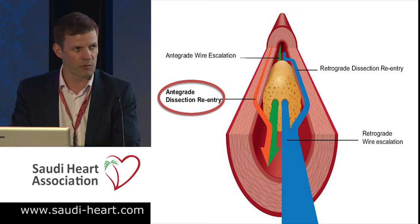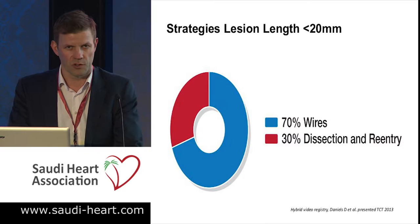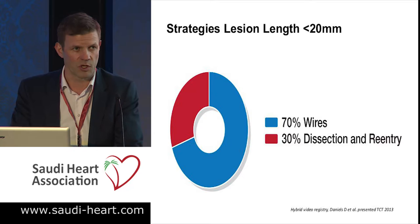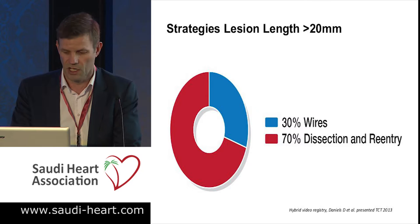When we think of a strategy, we should look at the anatomy of the lesion and ask: what are the chances of success? If it's a short lesion, less than 20 millimetres, our chances of just using antegrade wire escalation is around 70% successful. As that lesion creeps over the 20 millimetre barrier, our success with wires alone diminishes to around 30%. We need dissection re-entry type techniques, either retrograde or antegrade, to complete the case.